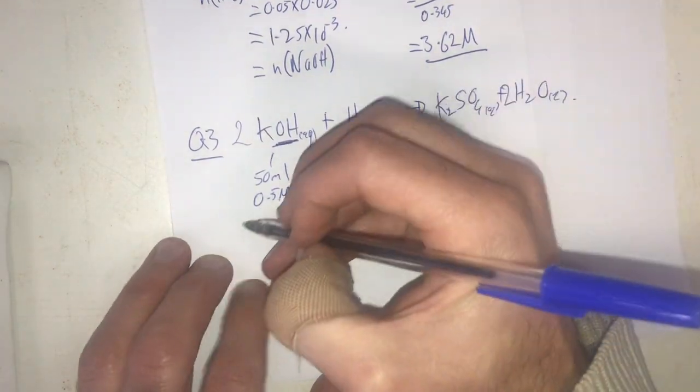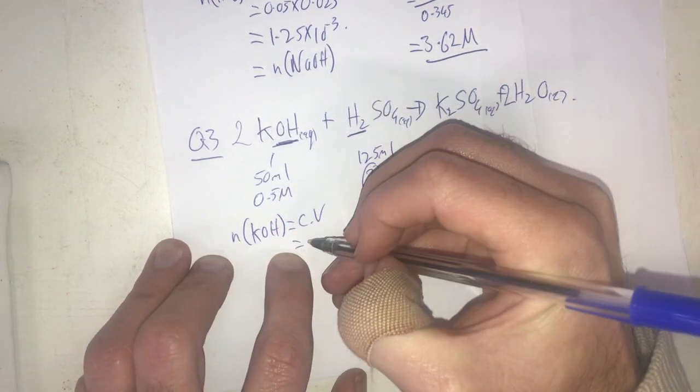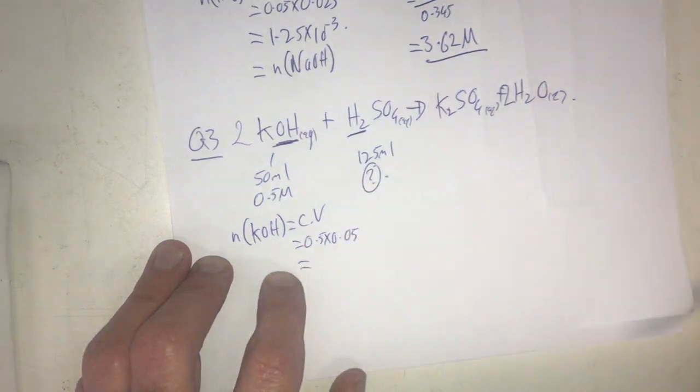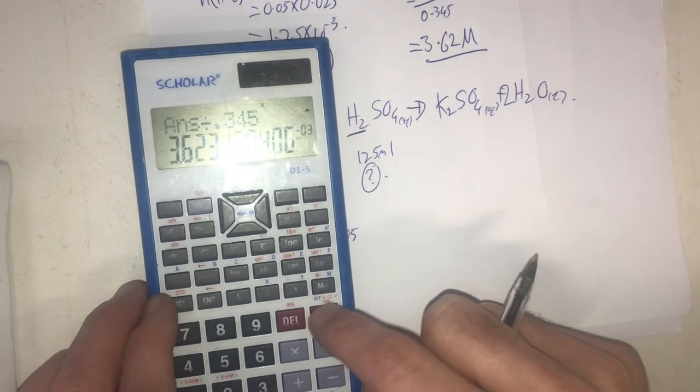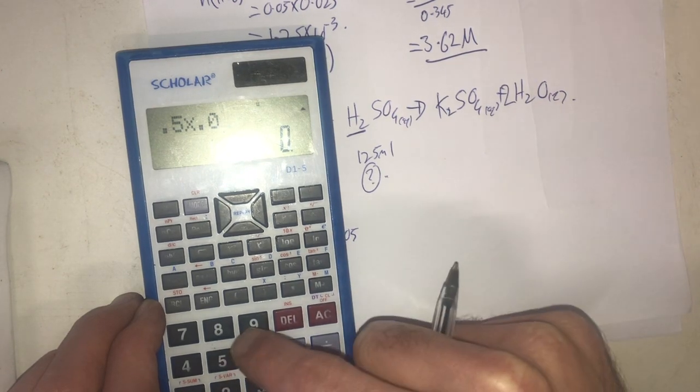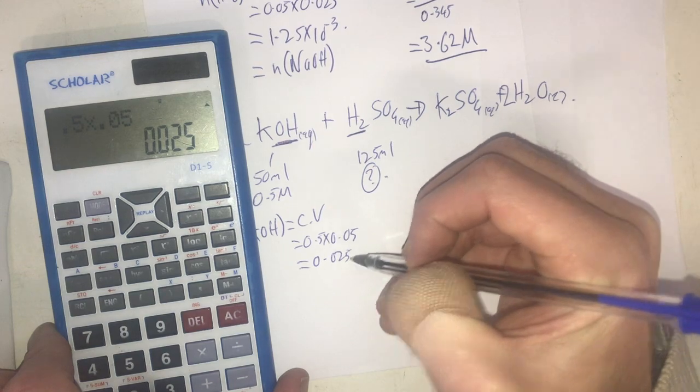So to do that, again following the same steps, I work out my number of moles of the thing that I actually have, which is going to be C times V, which is going to be 0.5 times 0.05. I'll go into my calculator, 0.5 times 0.05 is 0.025 mole.